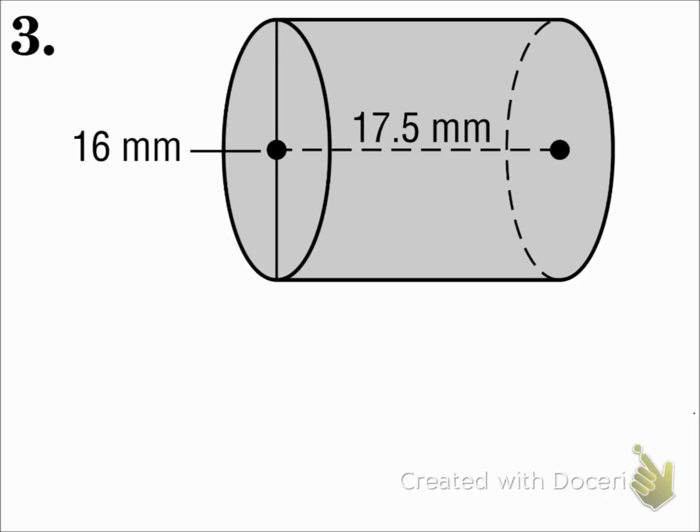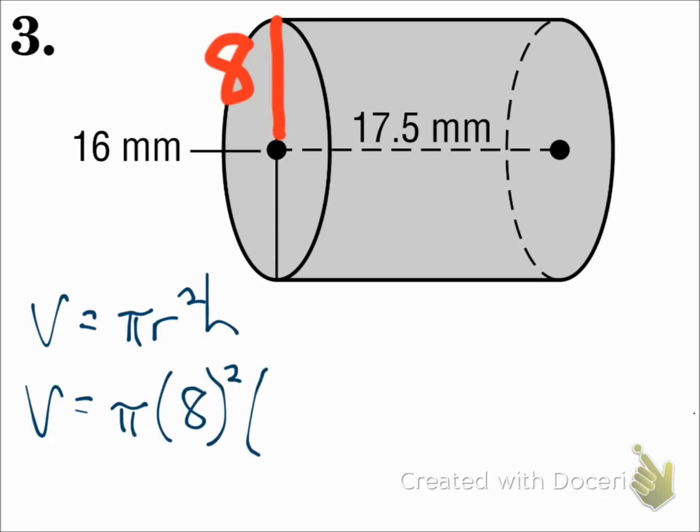Here we have a cylinder. The volume of a cylinder has the formula pi r squared h. The radius of the cylinder is half of the diameter. We know the diameter is 16, so the radius must be 8. And the height of the cylinder is the distance between the bases, which is 17.5.